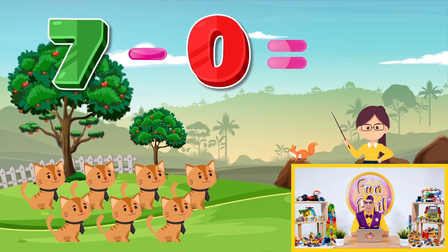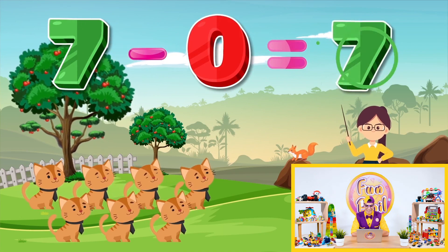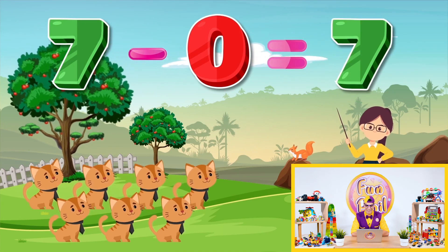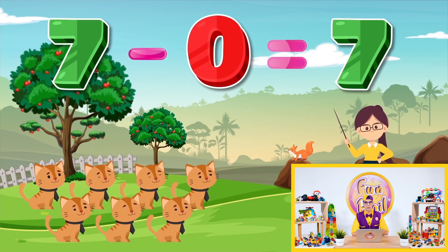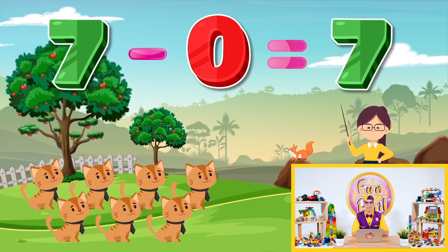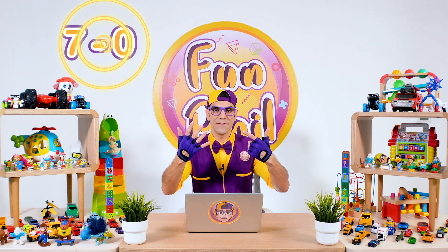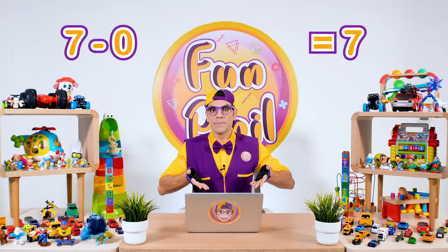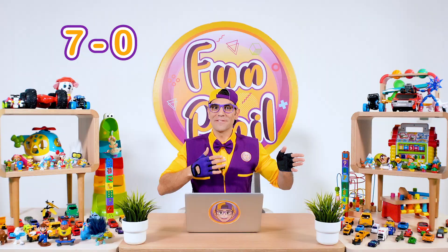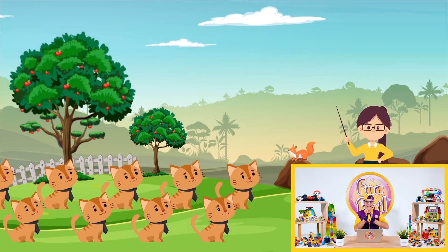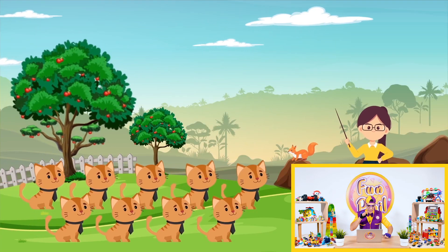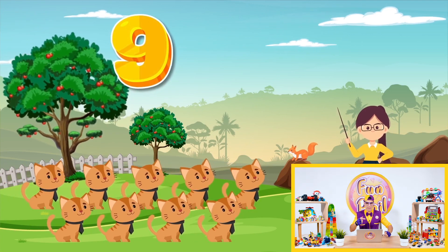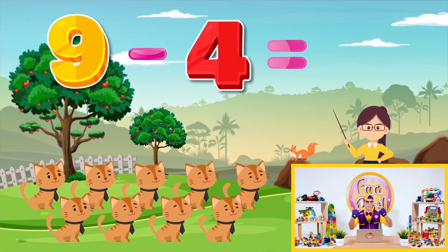Seven minus zero equals seven, right? Seven minus zero equals seven, because still we have seven — nobody left, nobody left. Okay, next equation: one, two, three, four, five, six, seven, eight, nine — nine minus four equals...